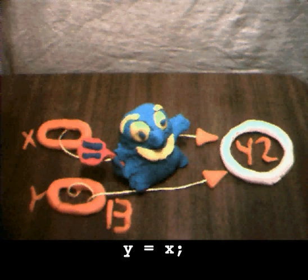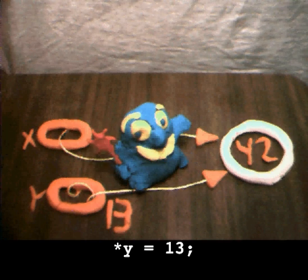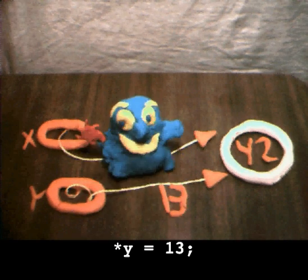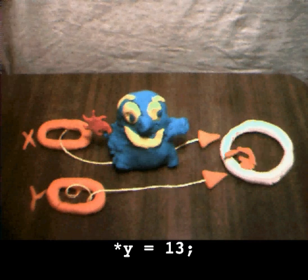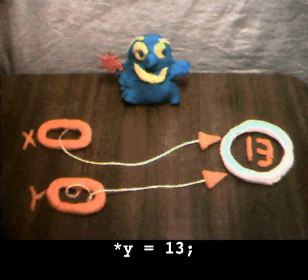So, so wait, now y is fixed. It has a pointee, so you can try the wand of dereferencing again to send the 13 over. Okay, here goes. Hey, look at that. Now dereferencing works on y. And because the pointers are sharing that one pointee, they both see the 13.